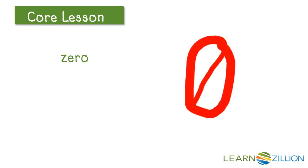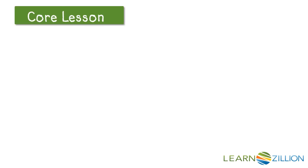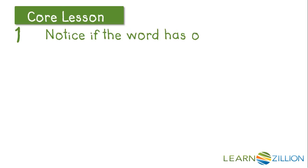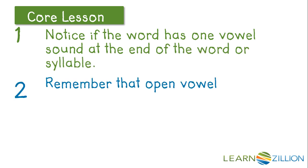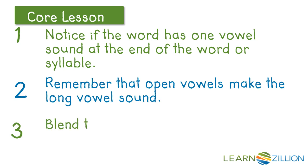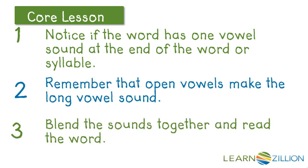Let's look at this example. First, let's find the vowels and see where we're going to split up the word. If we split it up here, we'd have a closed syllable making this say 'zero' — that's kind of difficult to say. Let's try moving the syllable break here. We've got two open syllables: zero. So, we have open syllables with a vowel sound at the end of the word or syllable. We noticed that the word had one vowel sound at the end of the syllable, remembered that open vowels make the long vowel sound, and blended the sounds together to read the word.